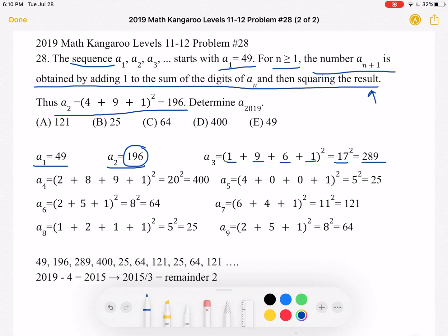Now we're going to continue doing this. A4 is going to be the sum of the digits of A3, so 2 plus 8 plus 9, and then add a 1, square it, which is 20 squared, and that equals 400.